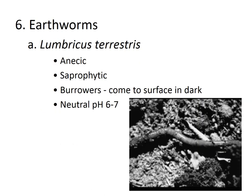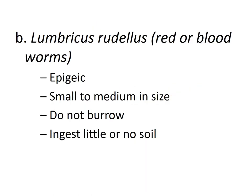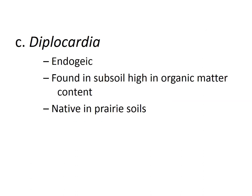Earthworms — scientifically known as Lumbricus terrestris — are anecic and saprophytic. They make burrows, come to the surface in the dark, evade sunlight, and prefer a slightly acidic to neutral soil pH range. Another species, Lumbricus rubellus, known as the red or blood worm, is small to medium in size, does not make burrows, and ingests little or no soil during movement.